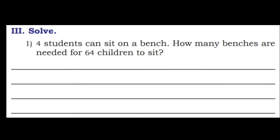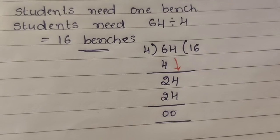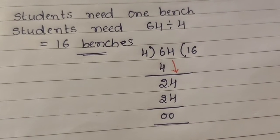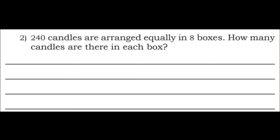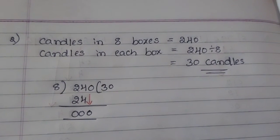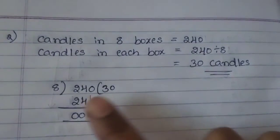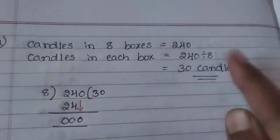Solve. First question: 4 students can sit on a bench. How many benches are needed for 64 children to sit? 4 students need 1 bench, so 64 students need 64 divided by 4. 4 ones are 4; 6 minus 4 is 2. Bring down 4. 4 sixes are 24; 24 minus 24 is 0. So 16 benches are needed. Second question: 240 candles are arranged equally in 8 boxes. How many candles are there in each box? Candles in each box is 240 divided by 8. 8 threes are 24; 24 minus 24 is 0. Total 30 candles are there in each box.